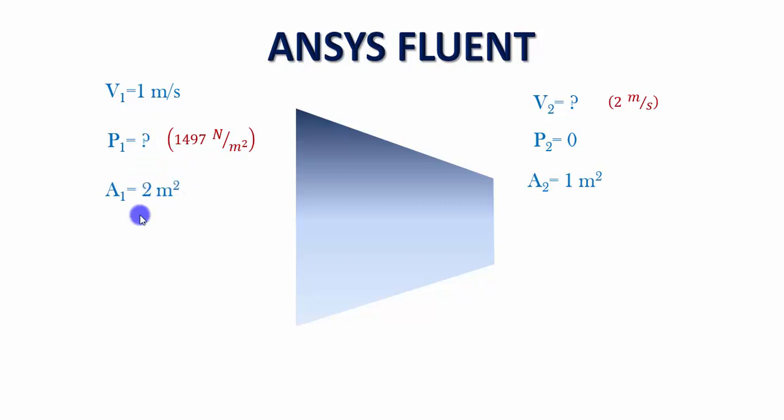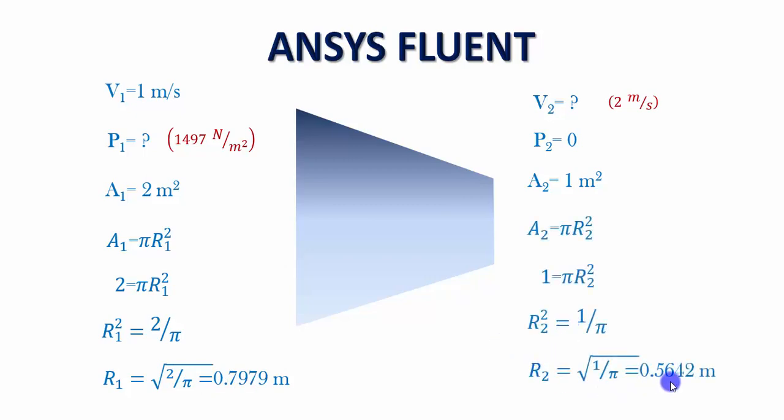The area at the inlet is 2 meter squared. At the outlet is 1 meter squared. If we know the area at the inlet, we can calculate the radius or diameter at the inlet. We know that area is equal to π r squared. Since we know the area is 2 meter squared, we can substitute that. If you bring r onto the left hand side and solve, you will get the radius value of 0.7979 meter. Similarly, we can calculate the radius at the outlet, that is 0.5642 meter for an area of 1 meter squared. Let us move on to the CFD solver ANSYS Fluent and do the calculation.